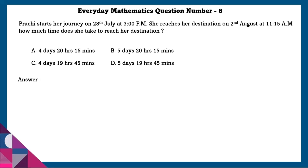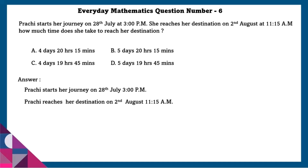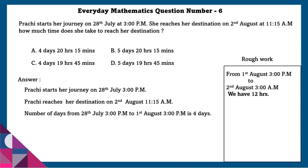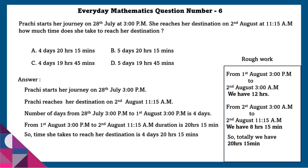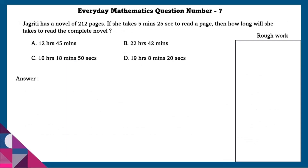Question 6: Prachi starts her journey on 28 July at 3 PM. She reaches her destination on 2nd August at 11:15 AM. How much time does she take to reach her destination? From 28 July 3 PM to 1st August 3 PM is 4 days. From 1st August 3 PM to 2nd August 3 AM is 12 hours. From 2nd August 3 AM to 2nd August 11:15 AM is 8 hours 15 minutes. Total duration from 1st August 3 PM to 2nd August 11:15 AM is 20 hours 15 minutes. So the total time is 4 days, 20 hours, and 15 minutes.